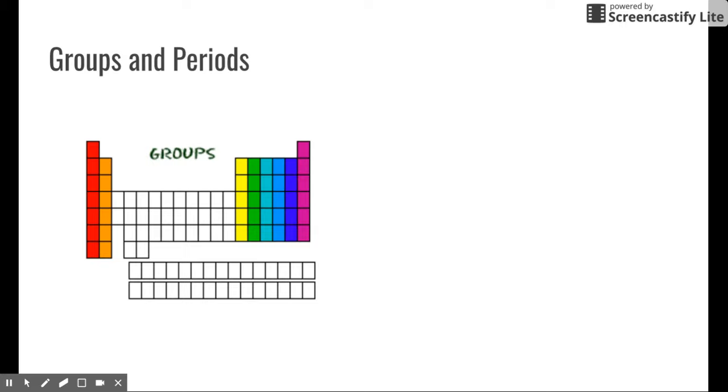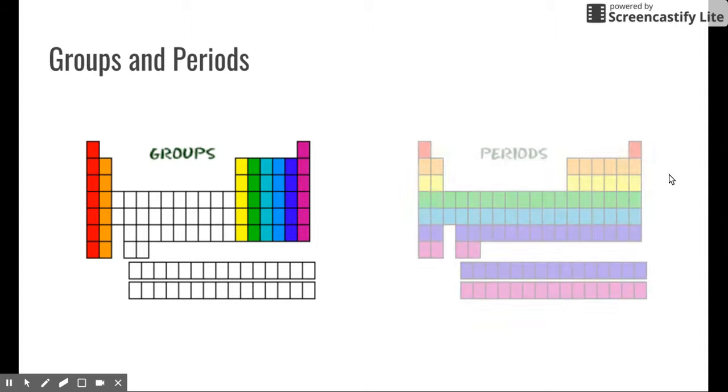Groups are just vertical columns on the periodic table. So you can see here, there's the red group, the orange group, the yellow group, the green group. Now watch out for color. Color doesn't necessarily mean anything on all periodic tables. It's not standard. You'll see a lot of periodic tables with colors, but they're not all standard. So don't go based on color, go based on that groups are vertical columns.